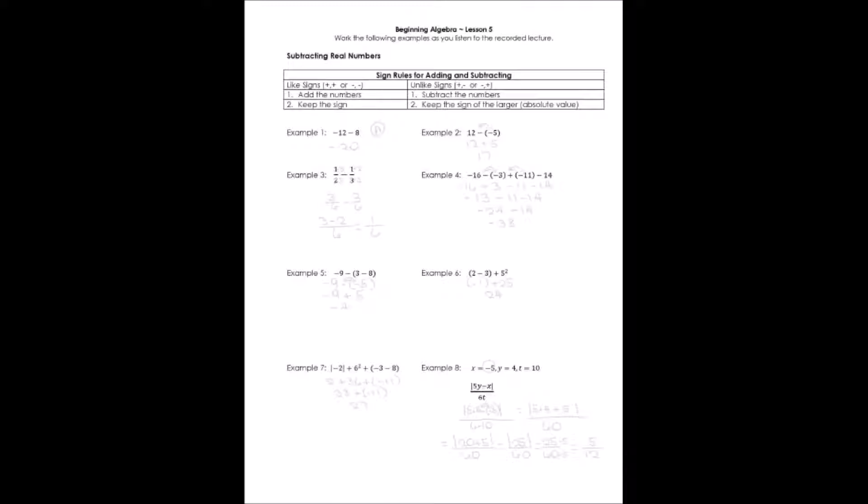Example 1 has negative 12 minus 8. Both of them are negative numbers. So what are we going to do? They have the same sign, we'll add them together. It would be 20, and we have to keep that sign. It was negative. The answer is negative 20.